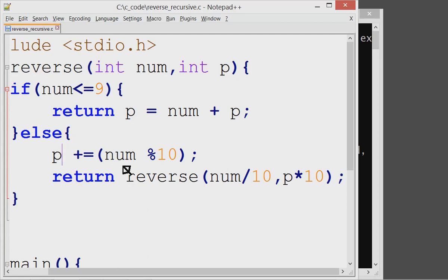Now, the sum is, in else part, the sum is p, that is 40, plus num modulo 10, that is 3. So this becomes 43.